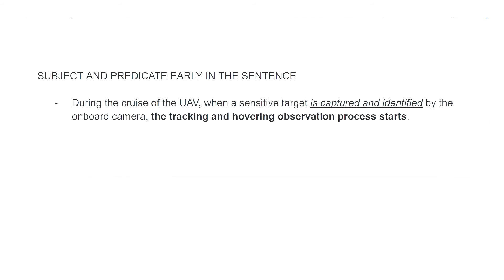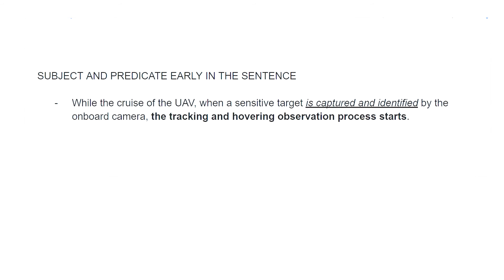Here's an example of why you want the subject and predicate not just close together, but also early in the sentence. This sentence is also weird — it has a passive construct and then an active construct, and the main sentence is 'the tracking hovering process starts.' They are describing a flowchart. So first, I want to change 'during' into 'while cruising' — this is also changing a noun into a verb.